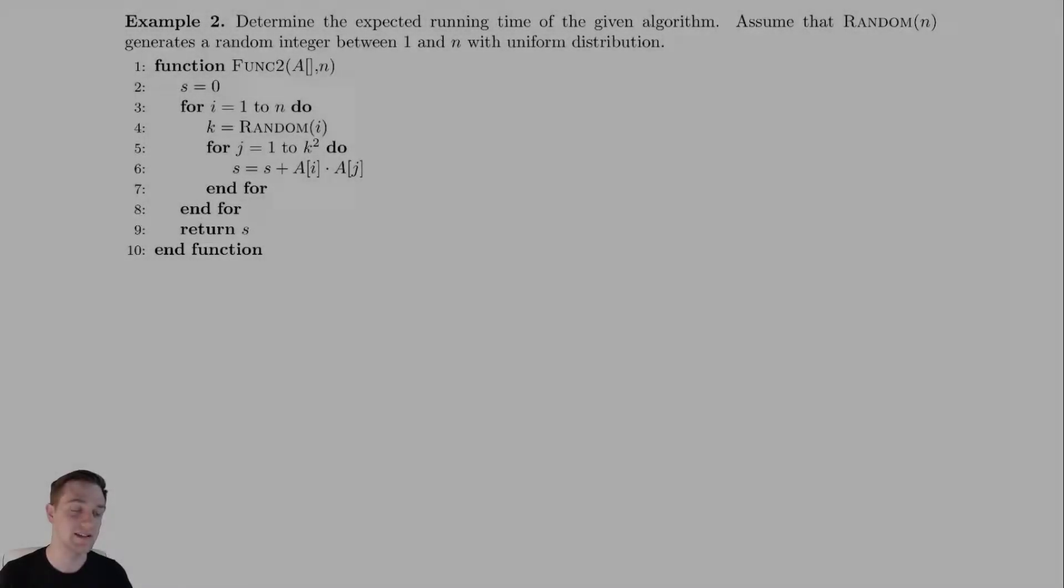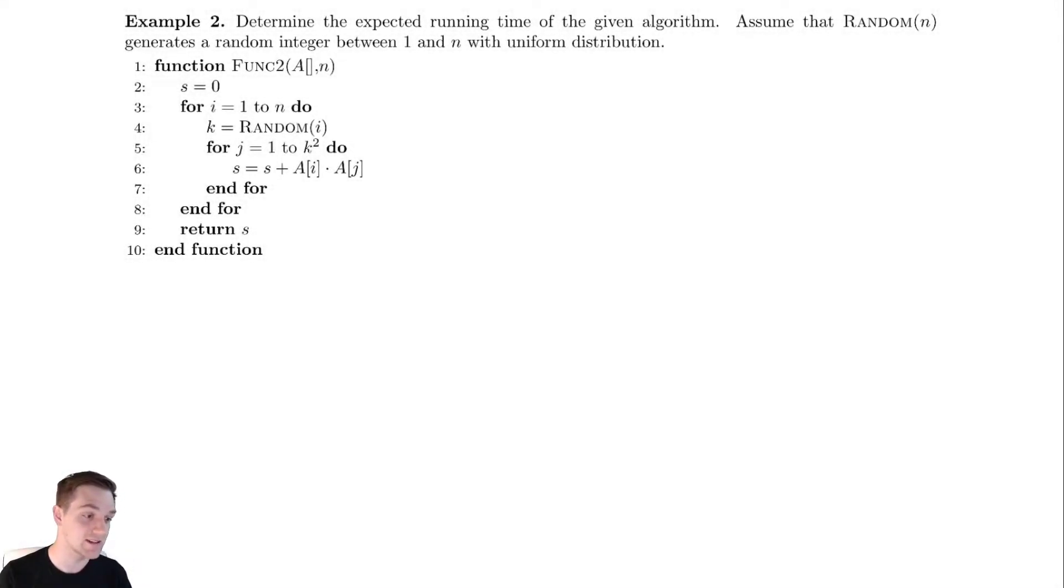In this video we're going to be analyzing another function a lot like the last. The question directive is the same and we are analyzing an algorithm that even looks very similar. If we look at this code, the stuff inside of the outer for loop, all the stuff I'm going to highlight in red, lines 4 through 7, looks a lot like the previous problem.